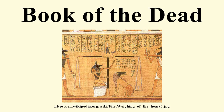The Book of the Dead was placed in the coffin or burial chamber of the deceased. There was no single or canonical Book of the Dead. The surviving papyri contain a varying selection of religious and magical texts and vary considerably in their illustration. Some people seem to have commissioned their own copies, perhaps choosing the spells they thought most vital in their own progression to the afterlife. The Book of the Dead was most commonly written in hieroglyphic or hieratic script on a papyrus scroll, and often illustrated with vignettes depicting the deceased and their journey into the afterlife.